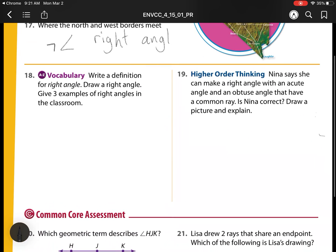On to number 18. Write a definition for a right angle. Draw a right angle. Give three examples of a right angle in the classroom. I'm going to draw my right angle and label it A, B, C. Write a definition. An angle that is how many degrees? 90 degrees. There's my definition, so I'm going to cross it out.